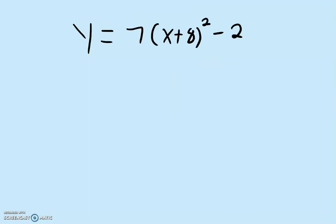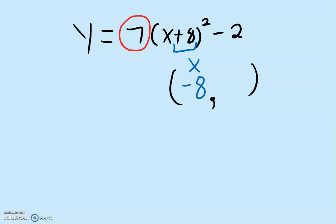In this example, we have this extra number on the outside, but that's okay. To find the vertex, we still do it exactly the same way as we have been doing. Inside with the x, we have a positive 8, so the x coordinate is going to be negative 8 because we changed the sign of the number inside. Now outside, for the y coordinate, we have negative 2. So the vertex is negative 2. Notice this 7 that is being multiplied has nothing to do with the vertex.